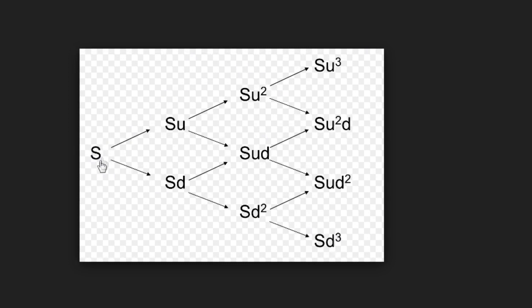This would be the stock value at time zero, or period zero. In period one, it could either go up or down — we only have two options. A stock can move up or down, though it could hypothetically stay the same. In the second period, it could go up again for the second time, so S times U squared.